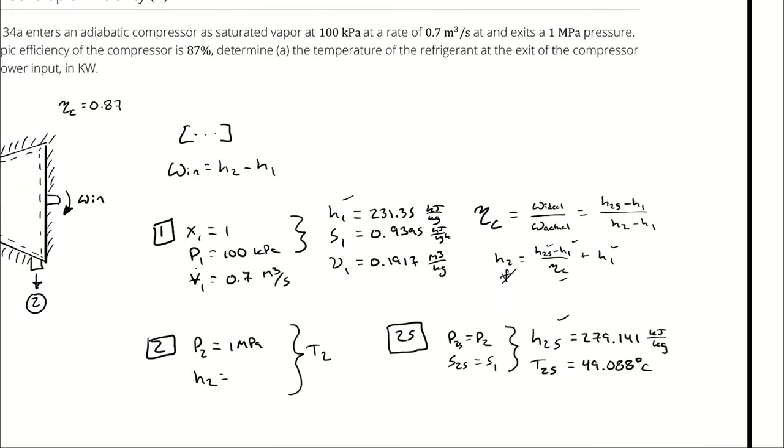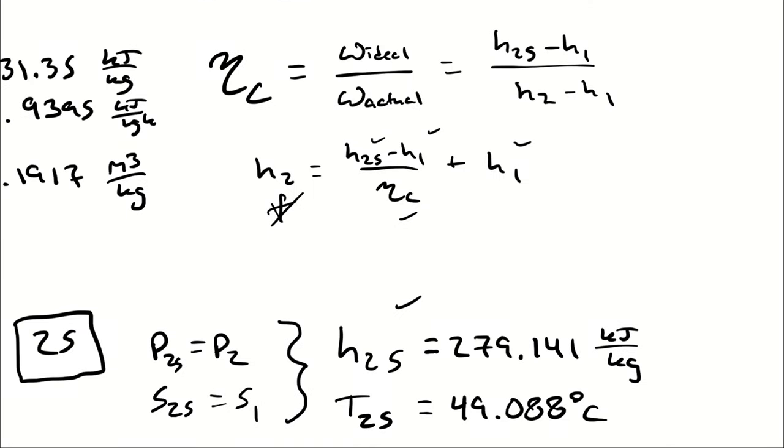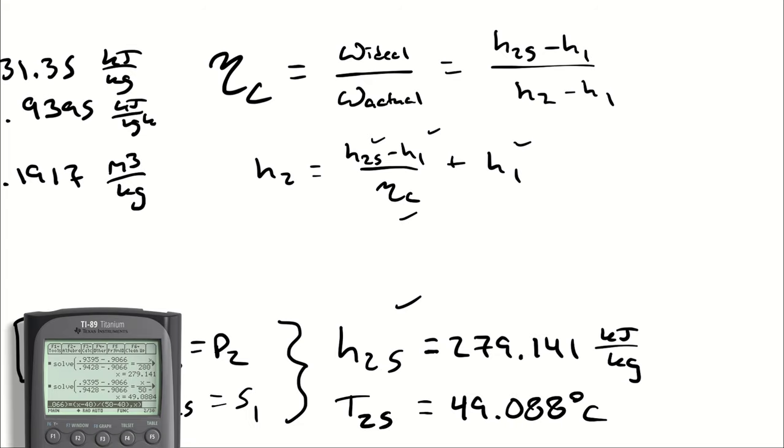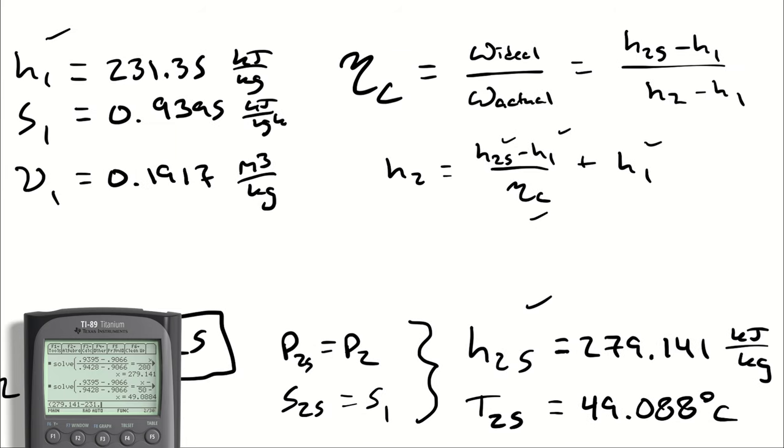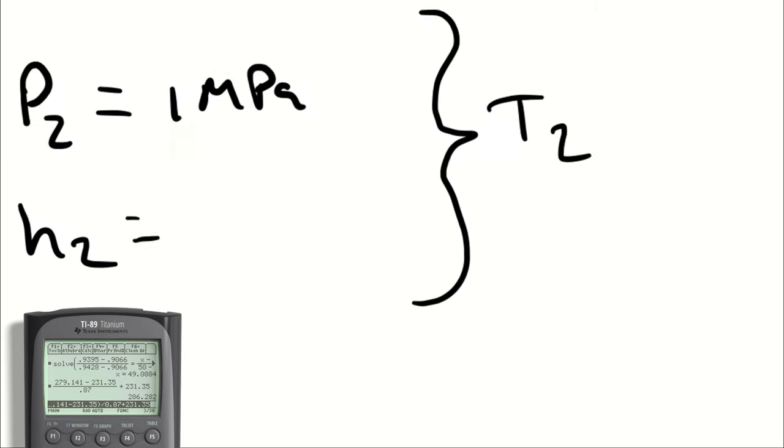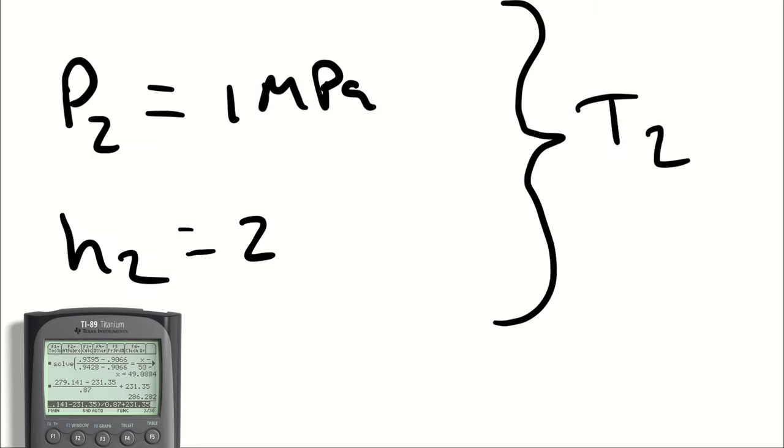H2 then is going to be H2S minus H1 divided by eta to C plus H1. So calculator, if you would come back, that's going to be 279.141 minus the enthalpy of state one, which was 231.35 divided by 0.87 plus 231.35. So my enthalpy at that state point is going to be 286.282. That'll be enough to allow me to calculate the power.